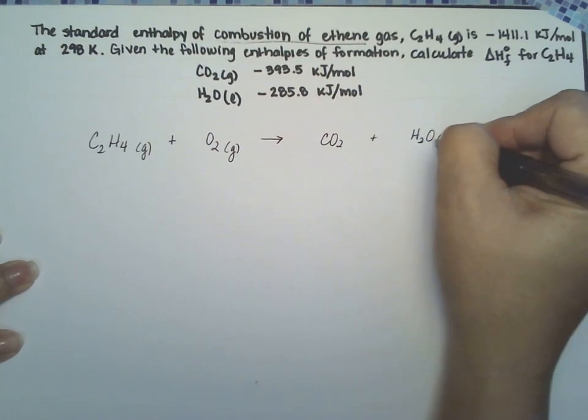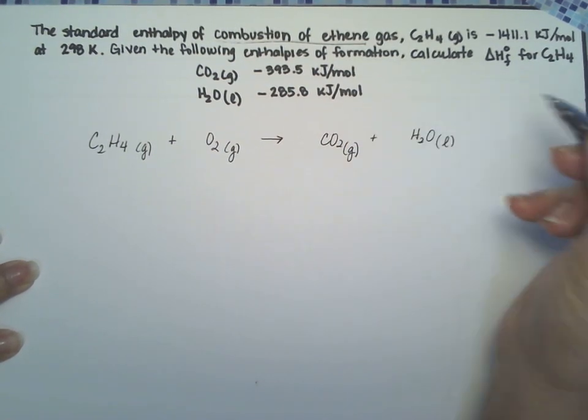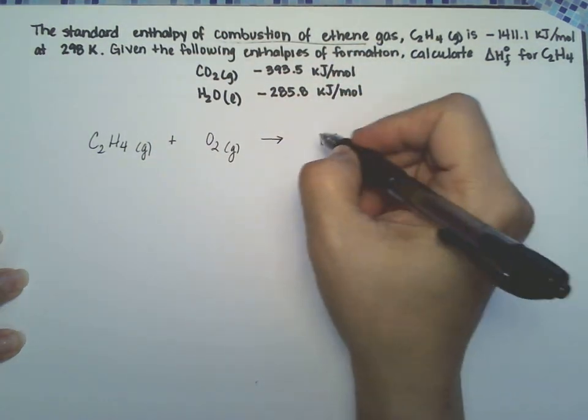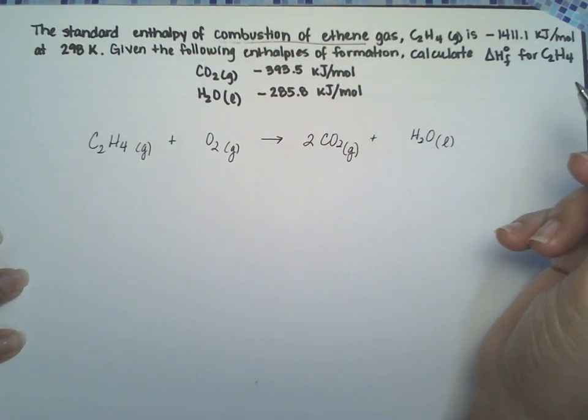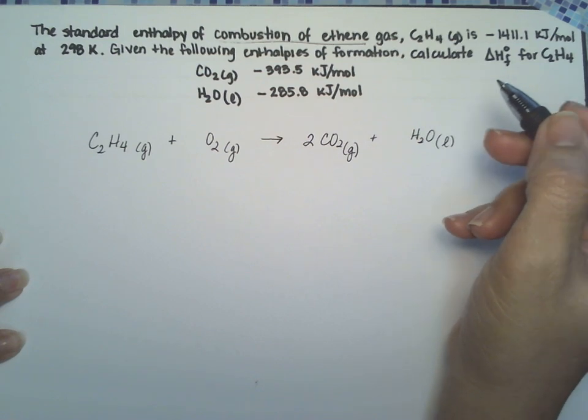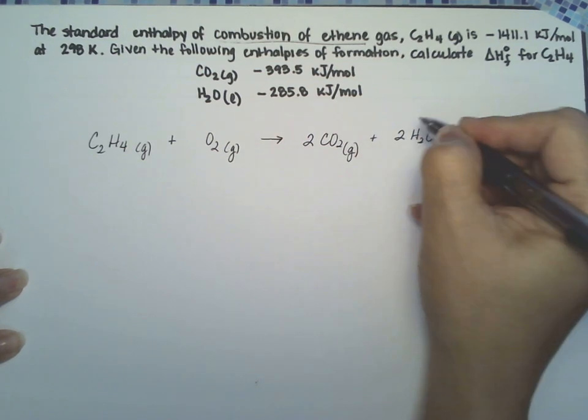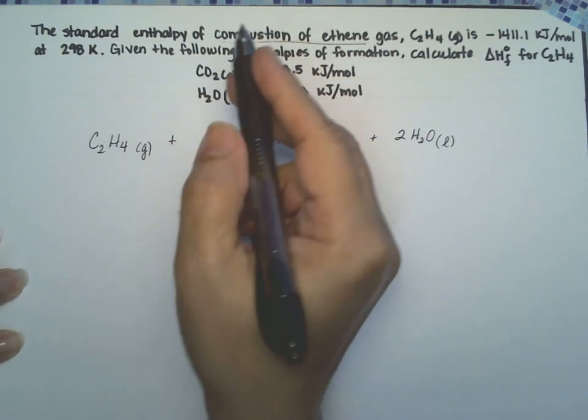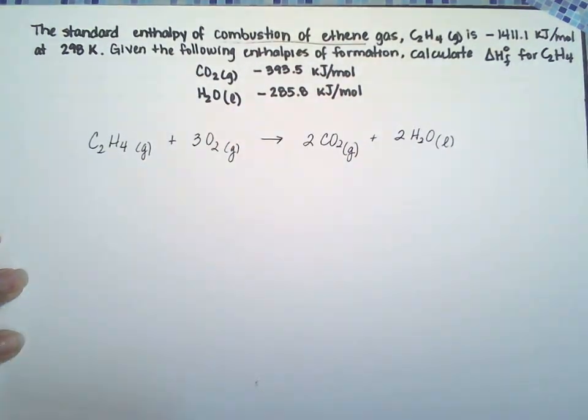So water is going to be liquid, CO2 is going to be gas, and I'm going to balance the equation. I'm going to start with the two carbons and then balance the four hydrogens, and that way I only have to adjust this oxygen here which will be adjusted with three.